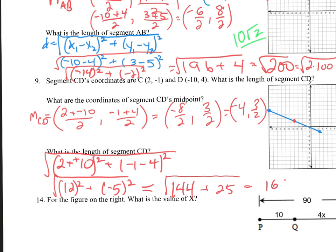So we have the square root of 169, and that is a perfect square. What's the square root of 169? It's 13. So the length of CD is 13. And notice: 5, 12, and 13 is what's called a Pythagorean triple — three whole numbers that satisfy the Pythagorean theorem.